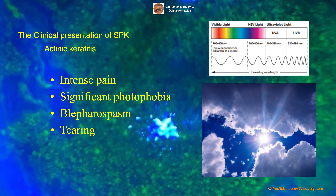In cases of actinic keratitis due to exposure to ultraviolet rays, the symptoms appear a few hours after exposure and usually present as very intense pain, significant photophobia, blepharospasm, and tearing.